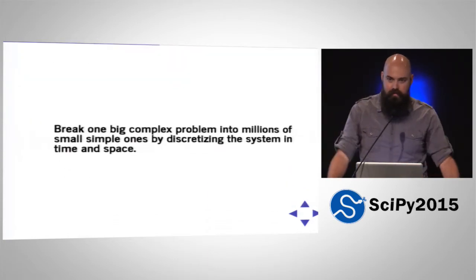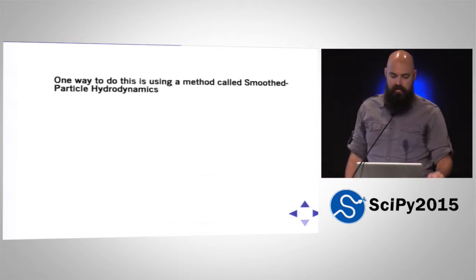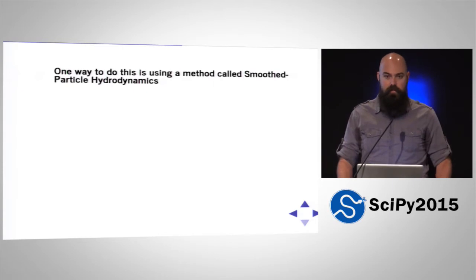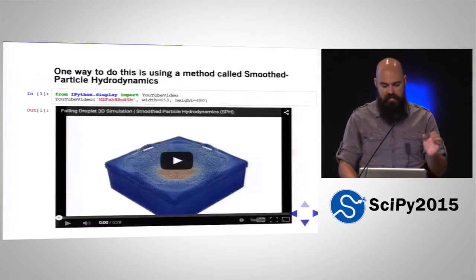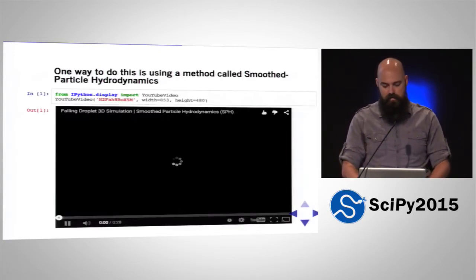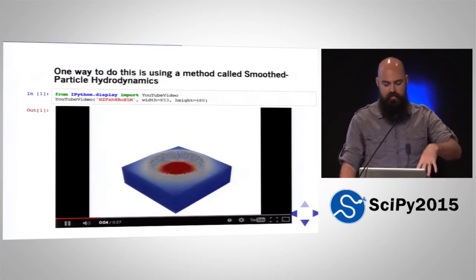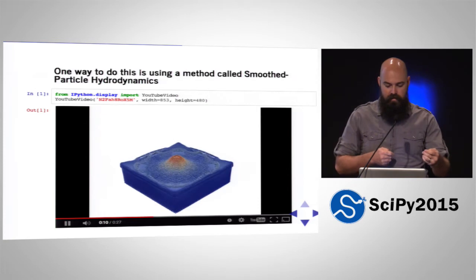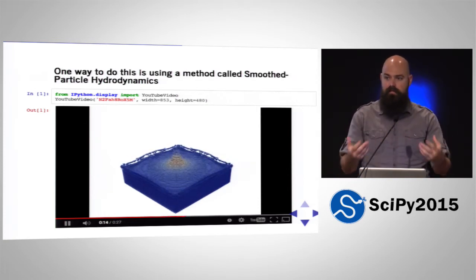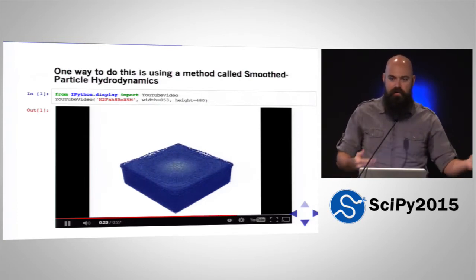To deal with a problem like this, we use numerical techniques — we break one big, complex problem up into millions of small, simple ones by discretizing the system in time and space. The method I use is called smooth particle hydrodynamics. Basically, you trace the system with a bunch of tracer particles — calculating the interactions between nearby particles — and it recreates the behavior of the system, similar to dropping water into a pond.